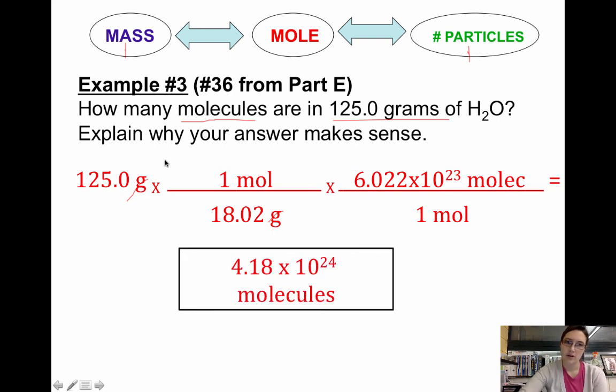And by the time you multiply everything else, when you put this in your calculator, you're doing 125 times 6.022E23, hit the equals, divided by 18.02. You should get 4.18 times 10 to the 24th molecules.